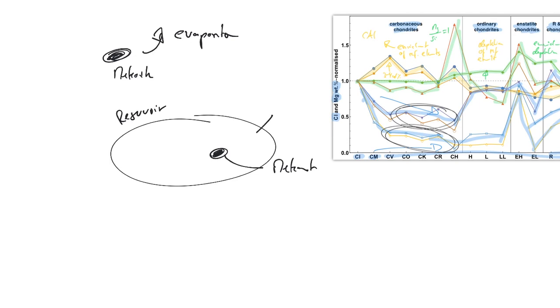And this reservoir might have a temperature of, say, 900 Kelvin, for example. And when then the material condenses into the meteorite or the precursor material of the meteorite, there might have been an incomplete condensation, and this incomplete condensation primarily affects the volatile elements.